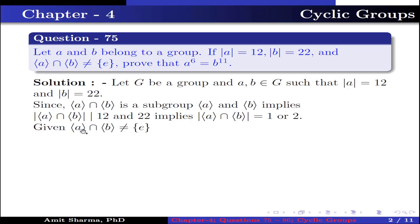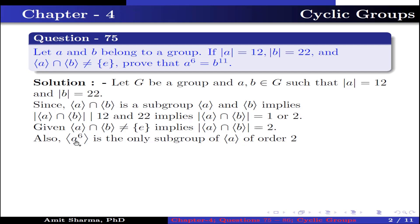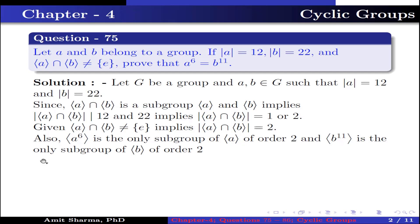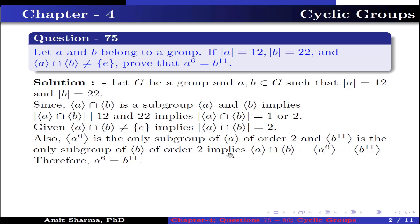Given that the group generated by A intersection the group generated by B is not equal to the identity, this implies the order is not equal to 1. Therefore the order equals 2. Also, the group generated by A⁶ is the only subgroup of order 2 in the group generated by A. This implies that intersection equals the group generated by A⁶, which equals the group generated by B¹¹. Therefore, A⁶ = B¹¹.